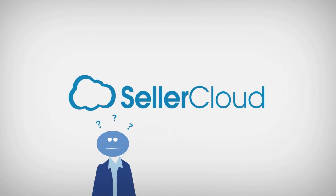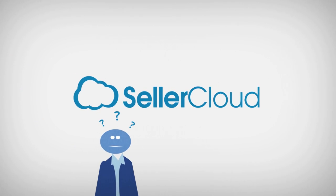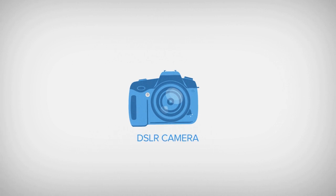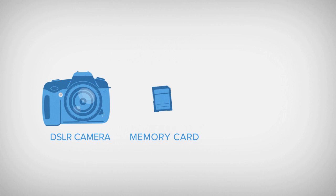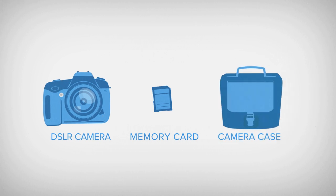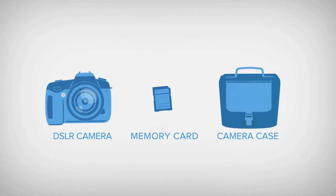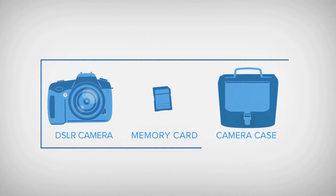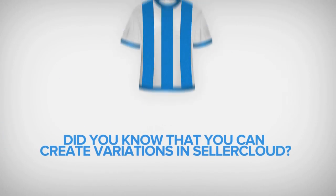But there's a whole lot more when you use Seller Cloud as your catalog manager. Let's say you want to create one listing that includes a camera together with several related products like a memory card and a camera case. Seller Cloud's powerful catalog functionality allows you to take individual items and list them together as a kit.